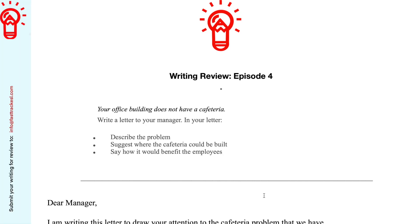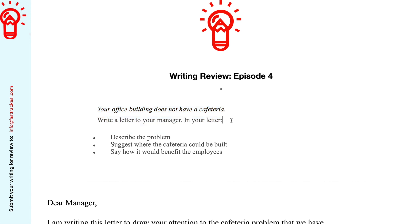Let's review the question first. The question says: your office building does not have a cafeteria. Write a letter to your manager, and in your letter you've got to do three things. One, describe the problem. Two, suggest where the cafeteria could be built. And three, say how it would benefit the employees.